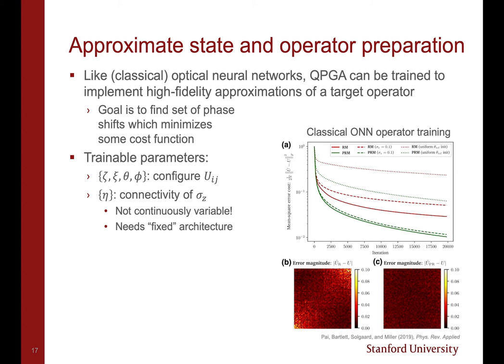Although we can explicitly program a QPGA to implement exact quantum operators, we can also leverage techniques from machine learning to implement high-fidelity approximate decompositions of a target operator using fewer physical circuit layers. The goal here is to find a set of phase shifts which minimizes some cost function, in this case the operator infidelity.